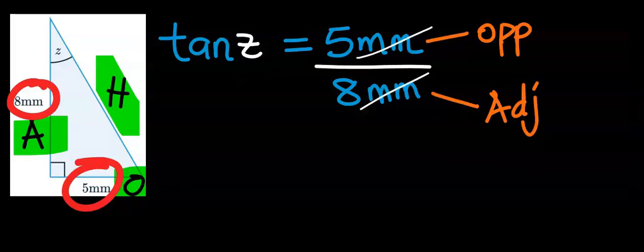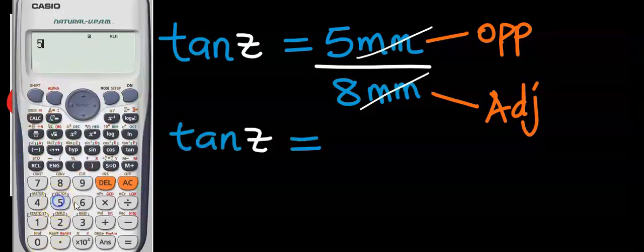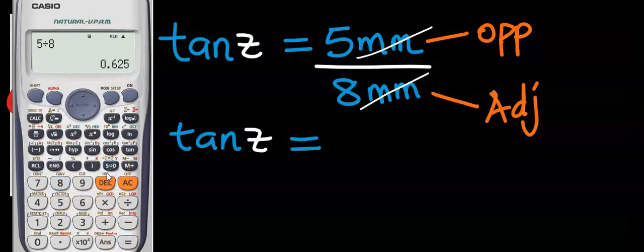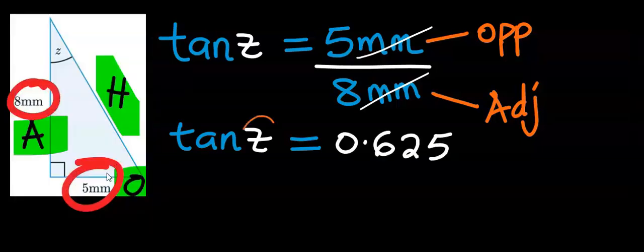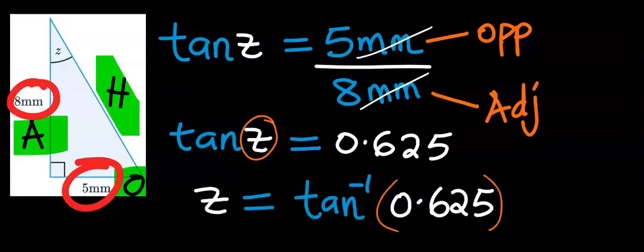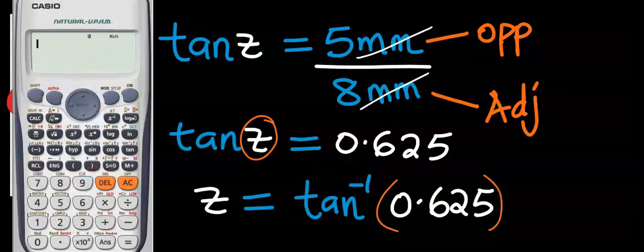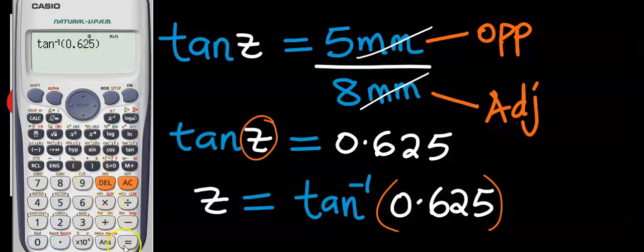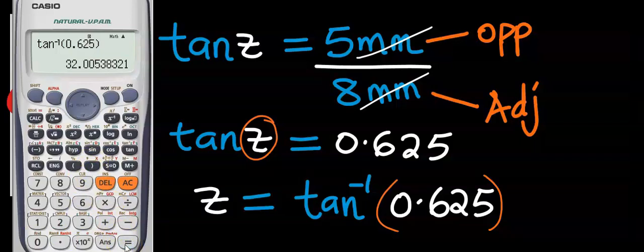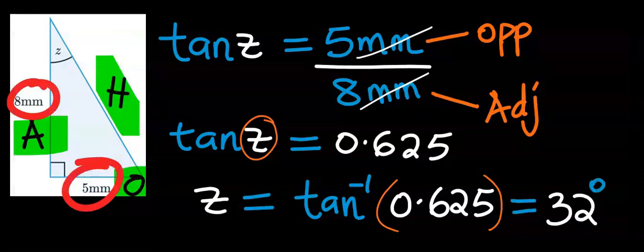Millimeters will cancel out millimeters. Next, 5 divided by 8 — if we change this to decimals, we're going to have 0.625. We're looking for angle Z; hence, tan will move to the other side and become tan inverse. Using your calculator, press shift, tan, and inside a bracket put 0.625. Close the bracket and press the equal sign. Our answer is 32 degrees. We have found the missing angle with the tan ratio.